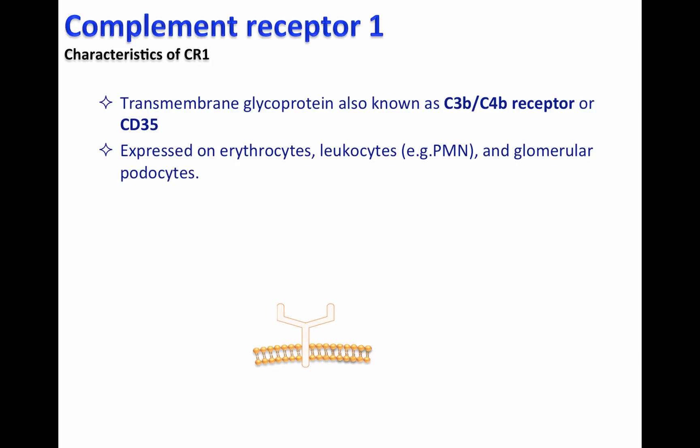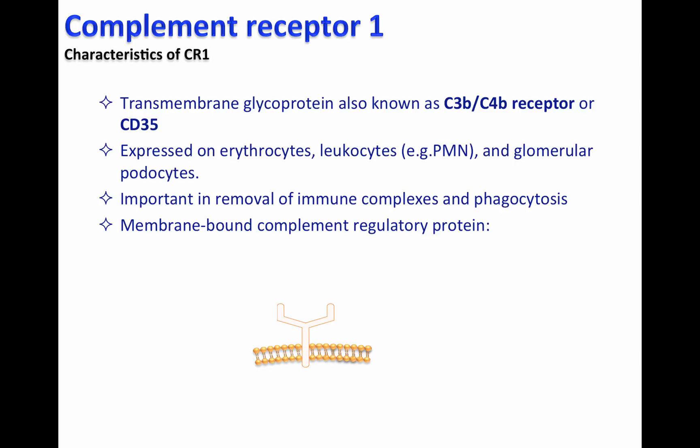CR1 is expressed on erythrocytes, leukocytes such as polymorphonuclear cells, and glomerular podocytes. CR1 plays a fundamental role in removing immune complexes from circulation and during the process of phagocytosis — functions covered in other videos. CR1 is a membrane-bound complement regulatory protein with two main activities: cofactor activity for Factor I, and decay accelerating activity, which are covered in this video.